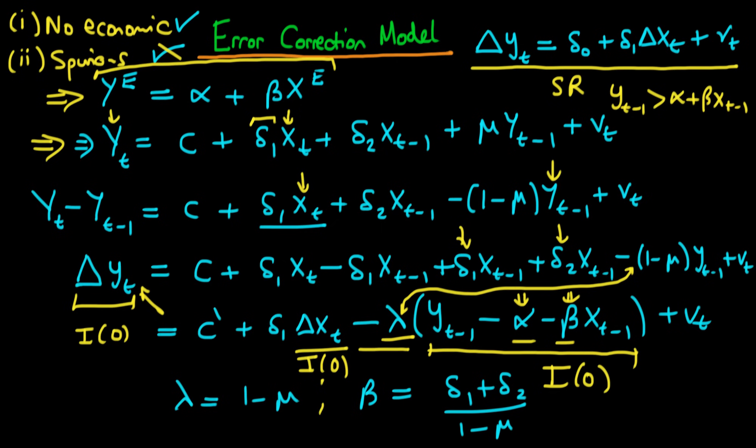So the idea is that this model allows for two types of things. Well it allows for both short run dynamics which is given by this sort of half of the expression here and it's short run because we're looking at first differences of yt regressed on first differences of xt. But it also allows long run dynamics into our model.